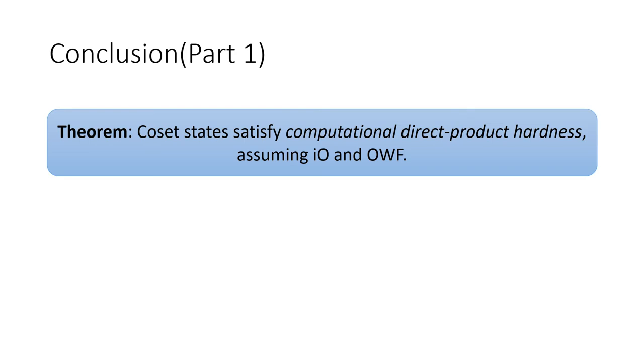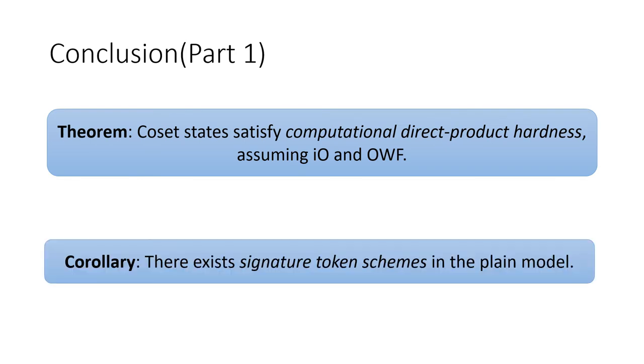To conclude the first part of the paper: first, we show that coset states satisfy computational direct product hardness, assuming IO and one-way functions. And secondly, as a corollary, there exist signature token schemes in the plain model.